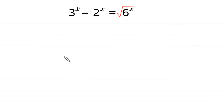Hello, welcome to how to solve this exponential equation. 3 to the power x minus 2 to the power x is equal to square root of 6 to the power x.